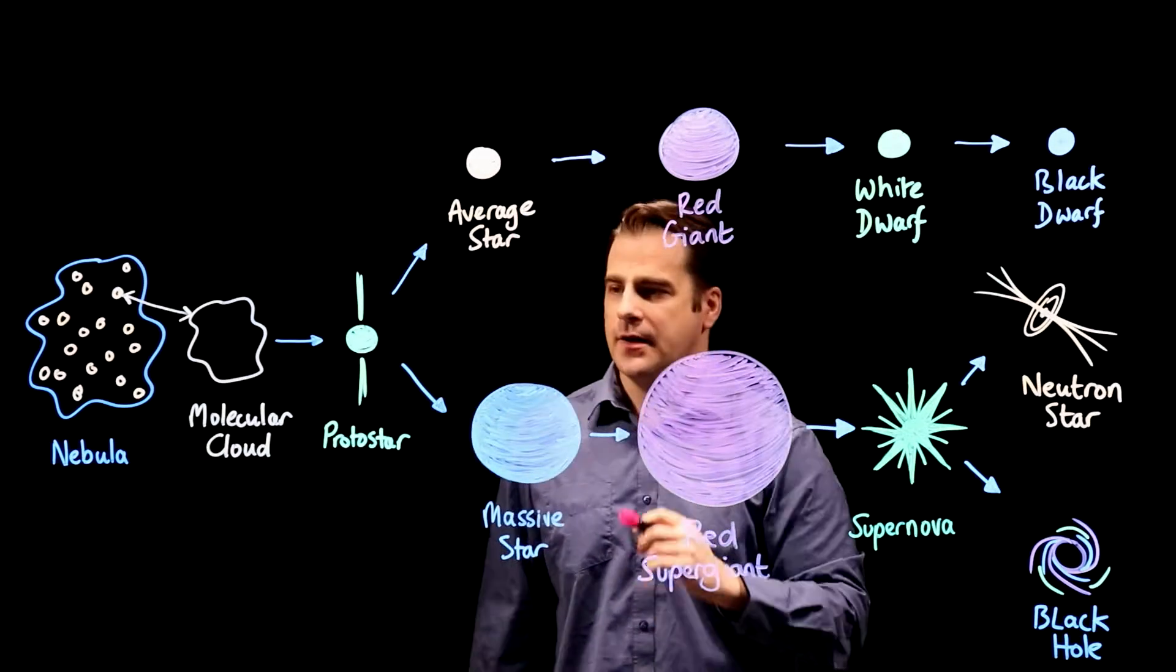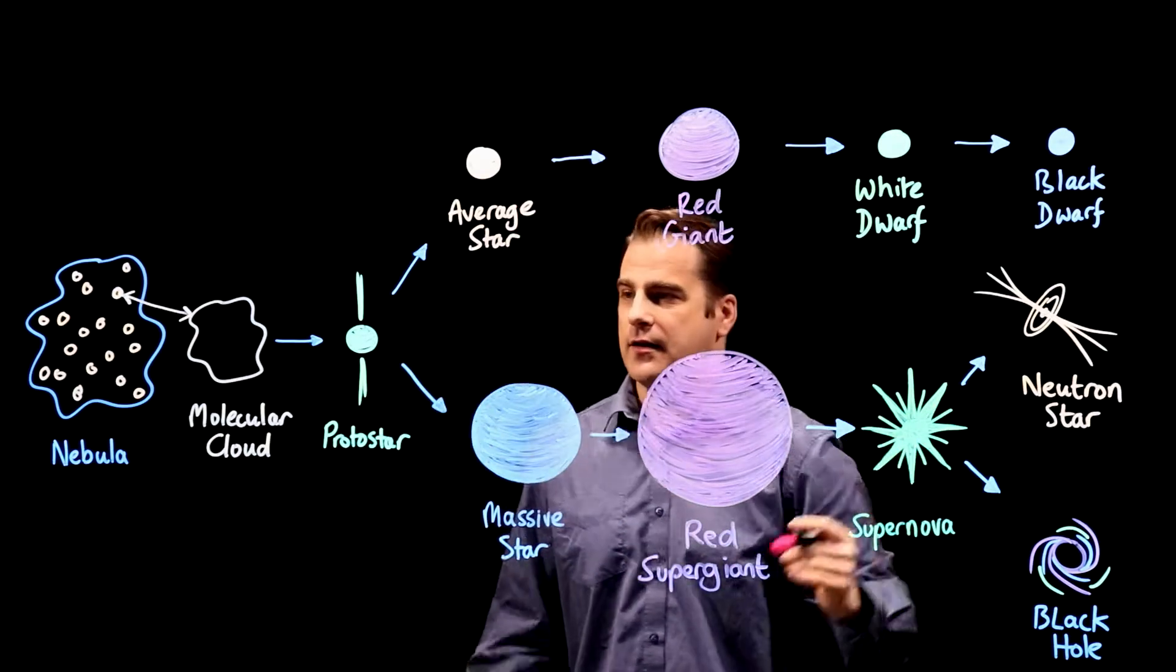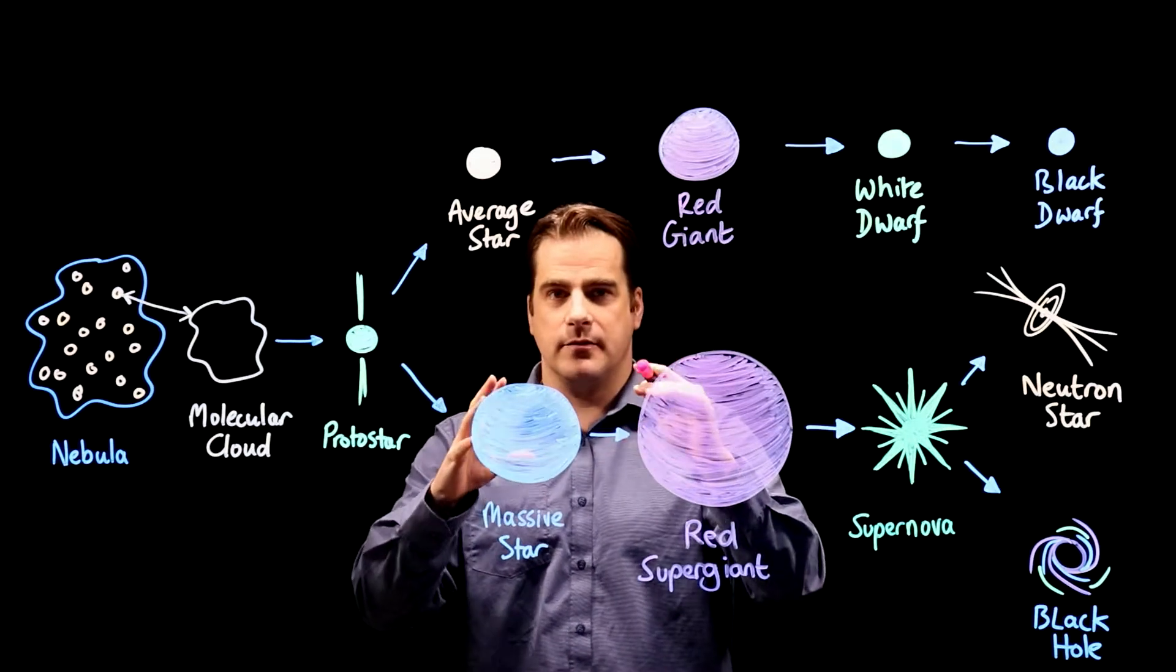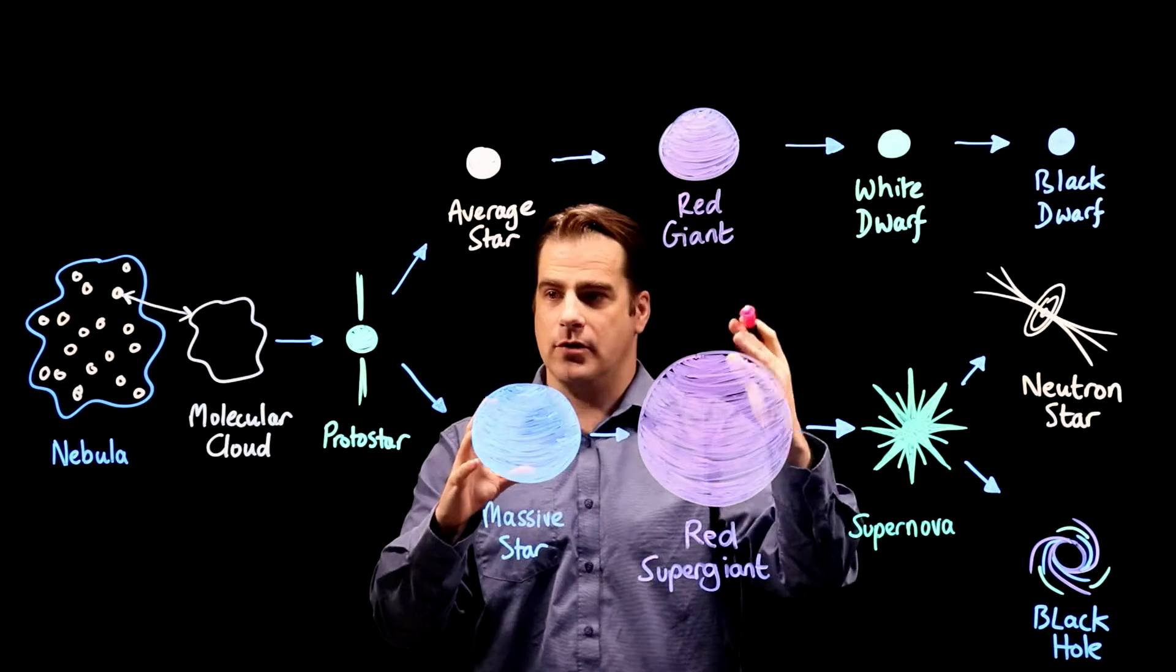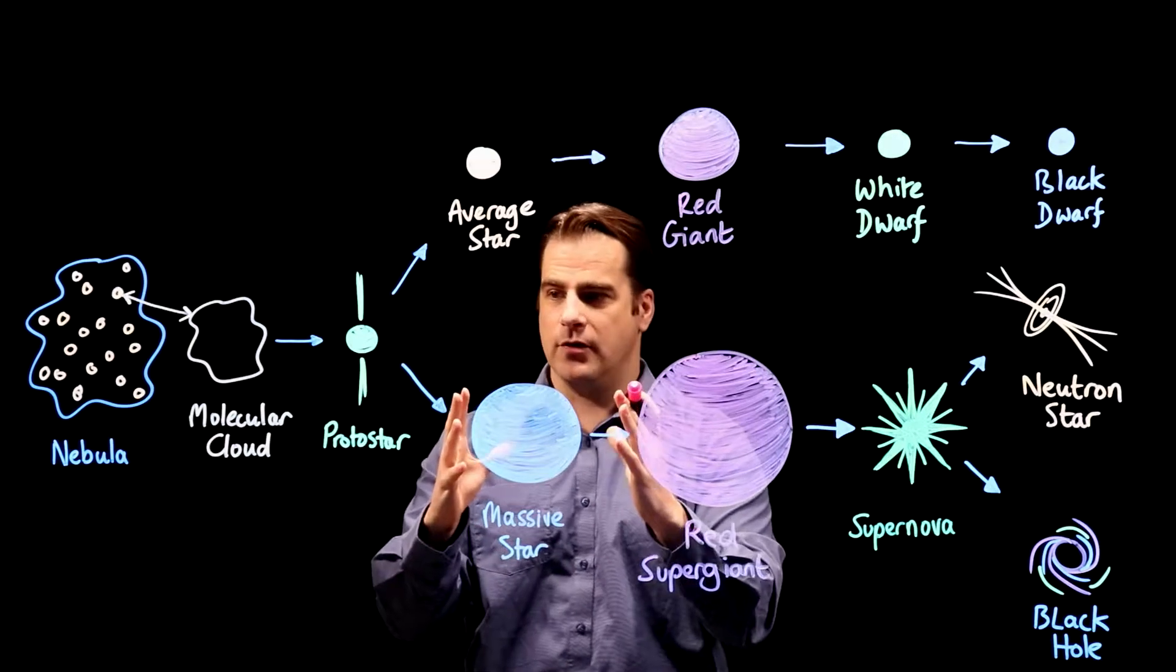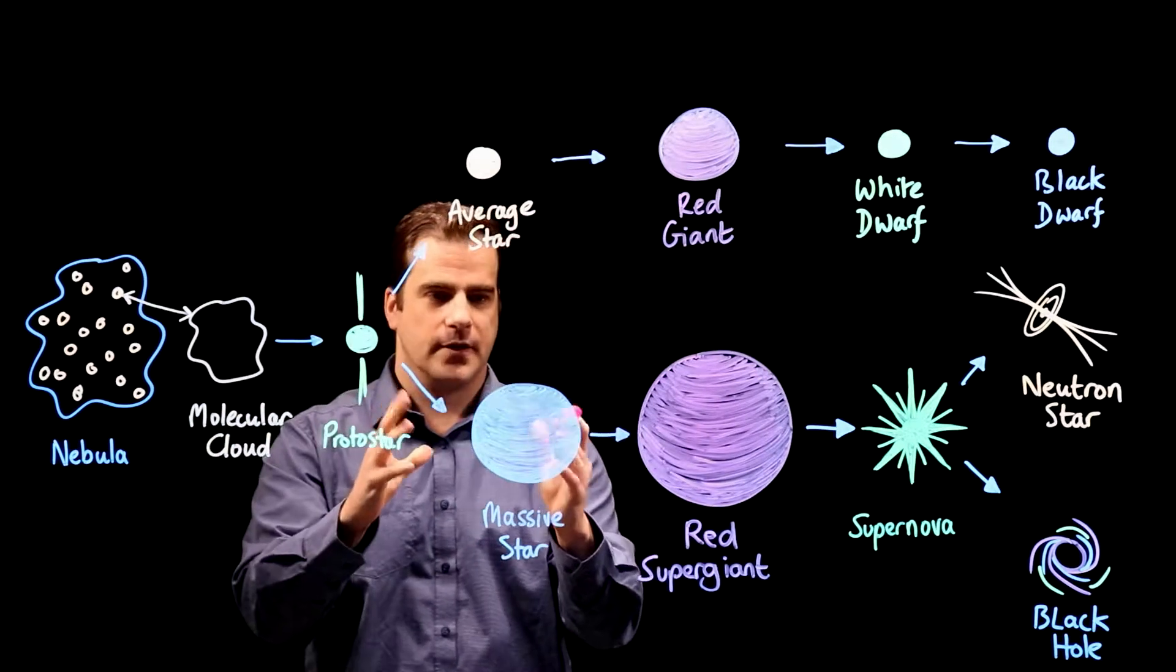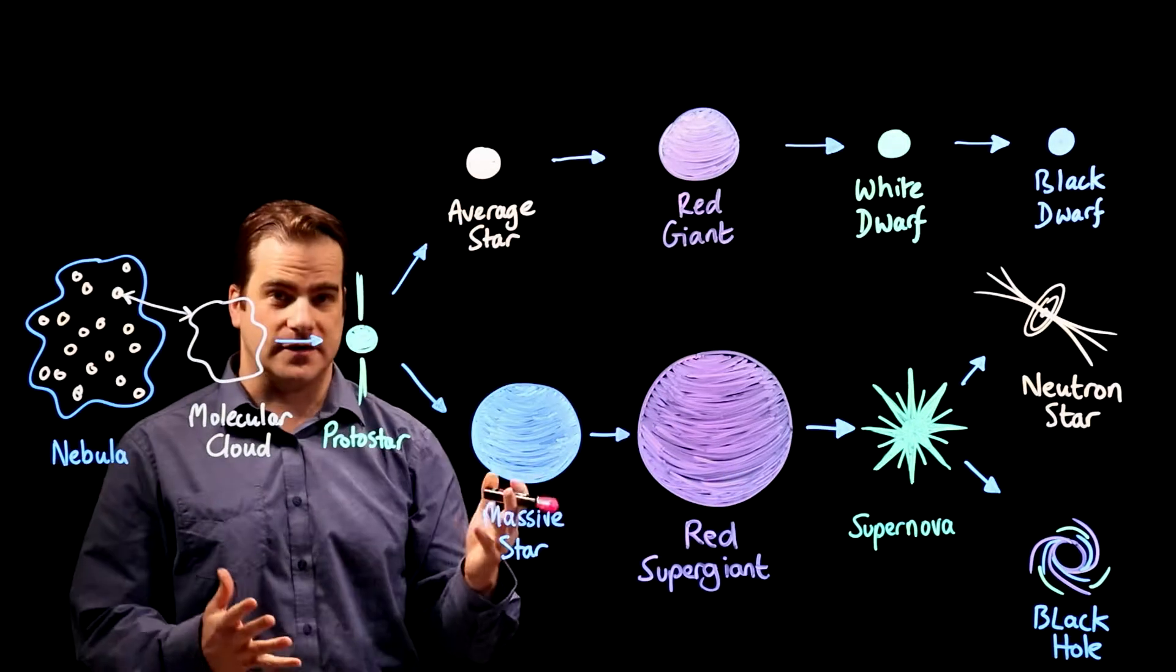Now what if you're much bigger than our Sun? If you're around eight times more massive than our Sun, eight times or more, you go down this path. Same as before you will form a star, only it's a massive star, it's much bigger than our Sun.